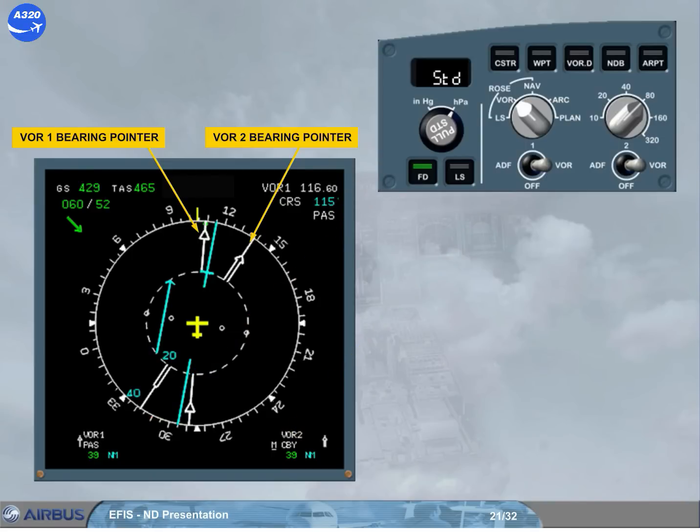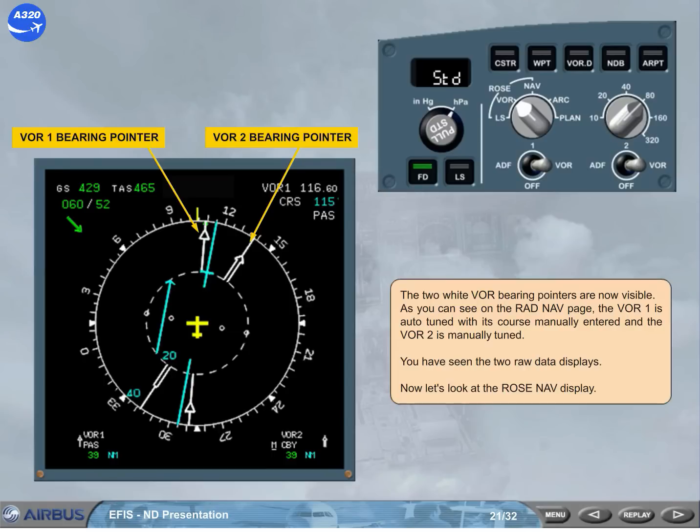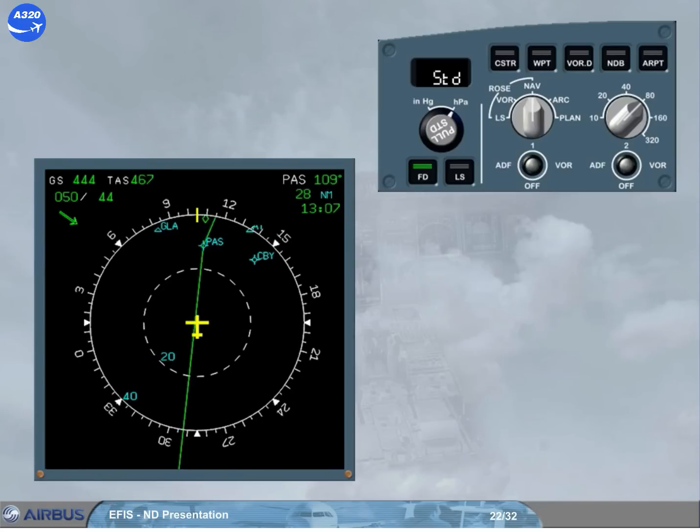Now, let's look at the ROSE NAV display. A map view of the area surrounding the aircraft is now displayed. On the EFIS control panel, the range selector is set at 80 nautical miles. It is the distance from the bottom to the top of the compass rose. The green line represents the flight plan. It will be studied in the A320 auto flight chapter.